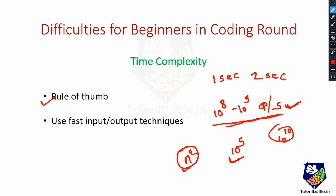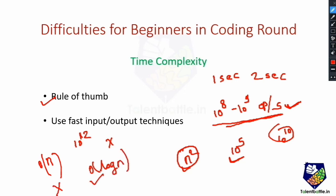Similarly, even if your complexity is O(n log n), if n is 10¹², that also exceeds 10⁹ operations. So that approach will not work either — you may need to go down to O(log n). Keep in mind this rule of thumb: your program's total operations should not exceed 10⁸ to 10⁹ per second within the given time limit.